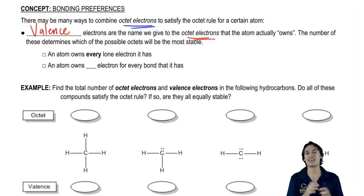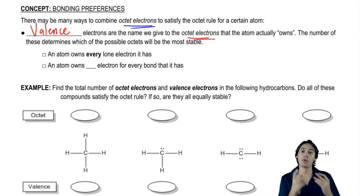So remember that we said that atoms can choose to share electrons in bonds or they can choose to have electrons as lone pairs. Both of them are going to count the same in terms of octet electrons because they're surrounding, they're part of the shell. But they're actually going to count differently in terms of the valence count. So let's talk about that.